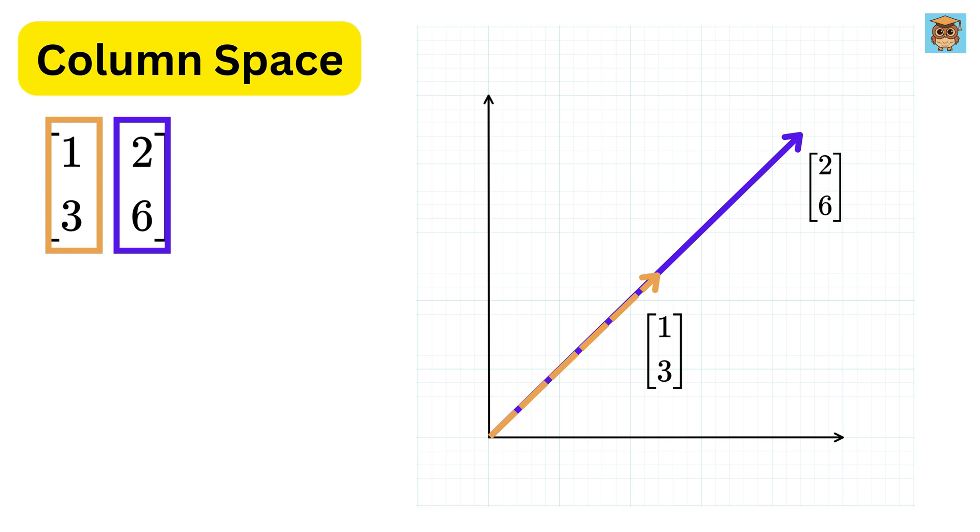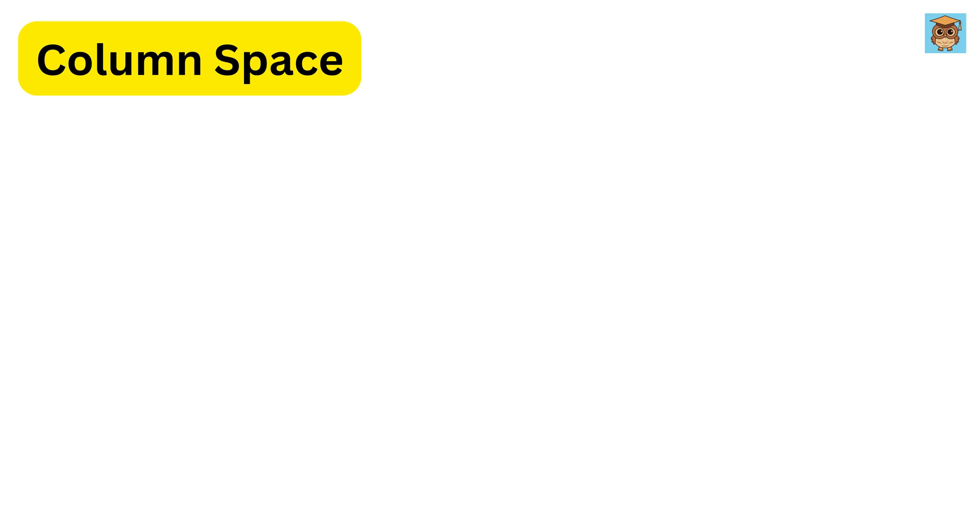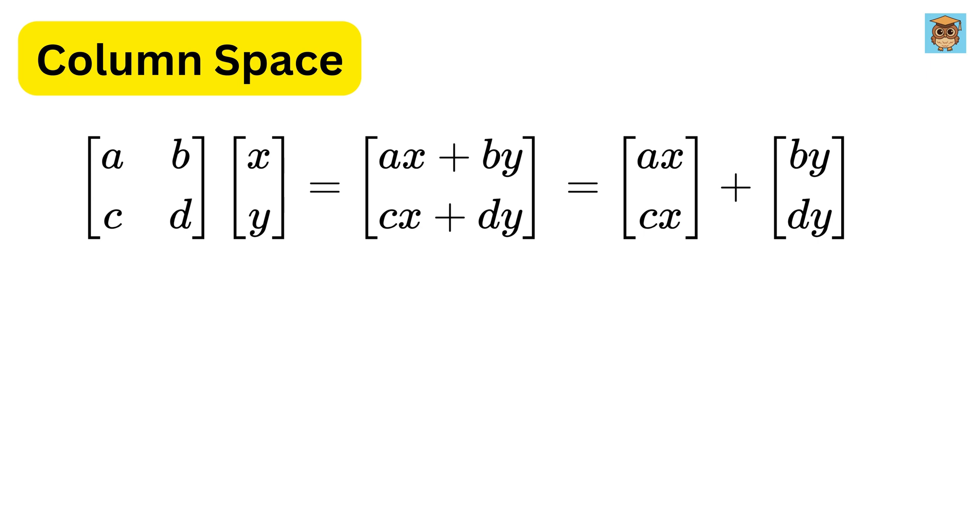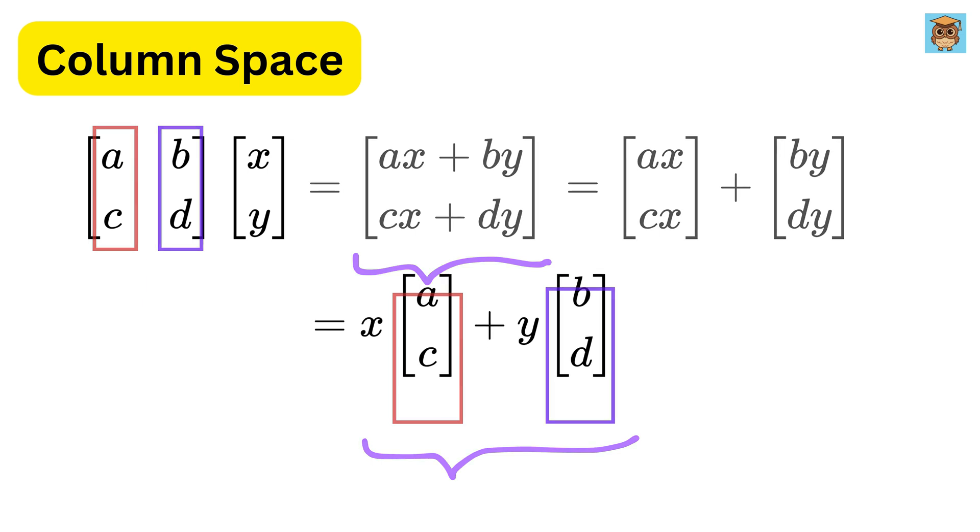That means both columns lie along the same line. So, no matter what combination of them you take, you'll always get a point on that line. A matrix is made of columns, like if we have a matrix A as A, B, C, and D, and if we multiply it with an input vector X and Y, then we get this as the result, right? We can also split and rewrite it like this. So, taking X as common, we get this as X times A, C plus Y times B, D. So, it is clear that the output vector is nothing but the set of all linear combinations of the columns of the matrix A.